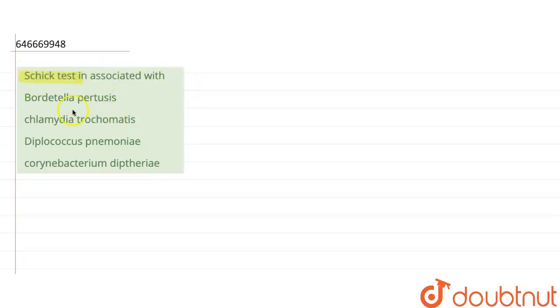Schick test is associated with - the options are Bordetella pertussis, Chlamydia trachomatis, Diplococcus pneumoniae, or Corynebacterium diphtheriae. So Schick test is a skin test which was developed in 1913.